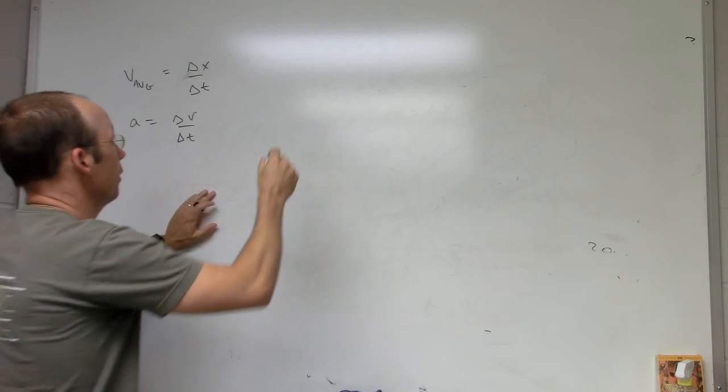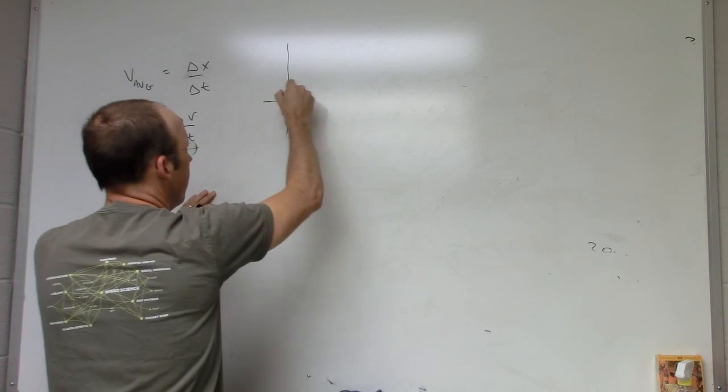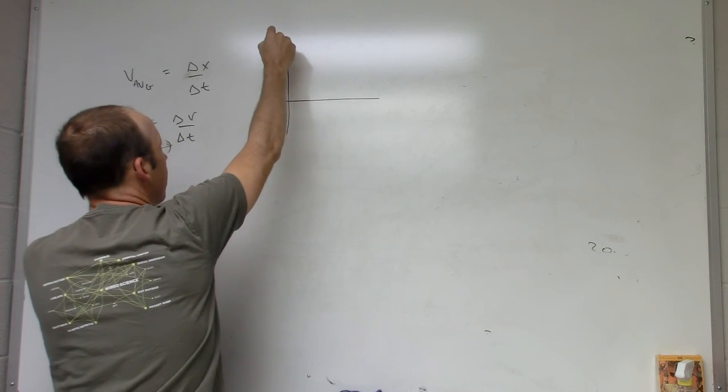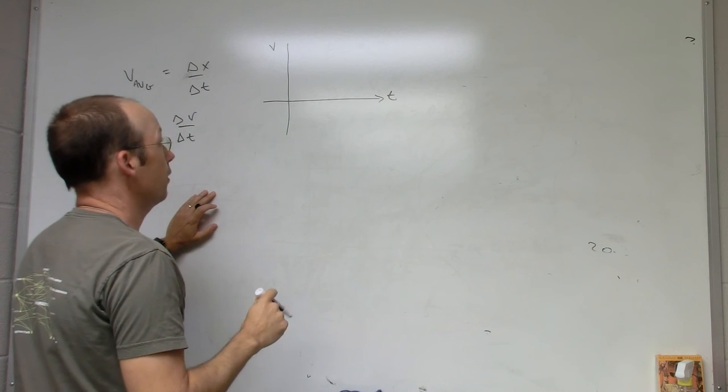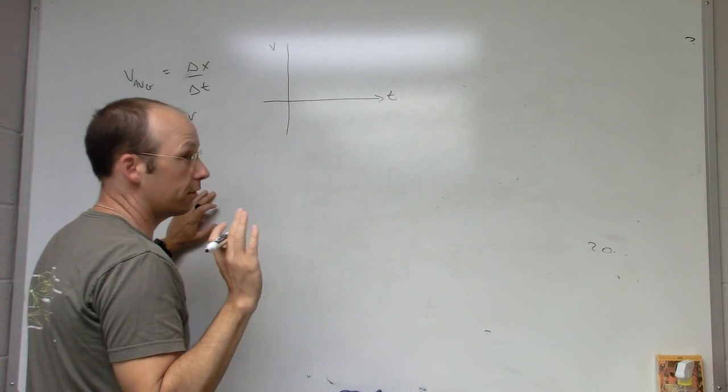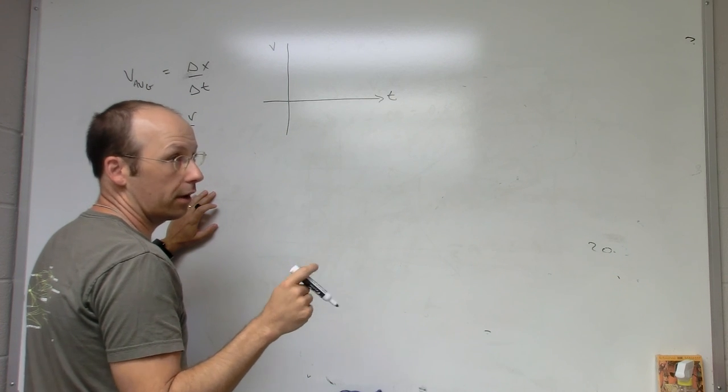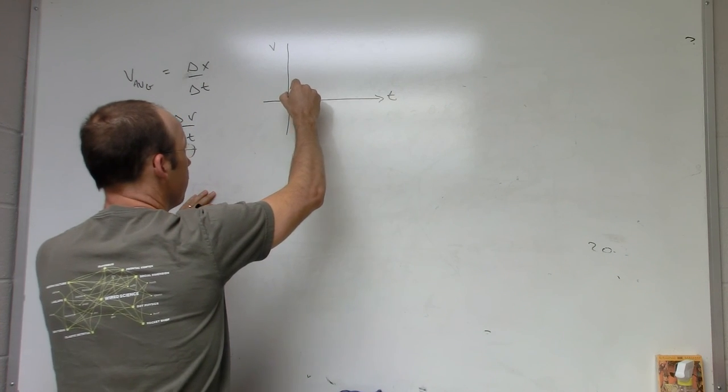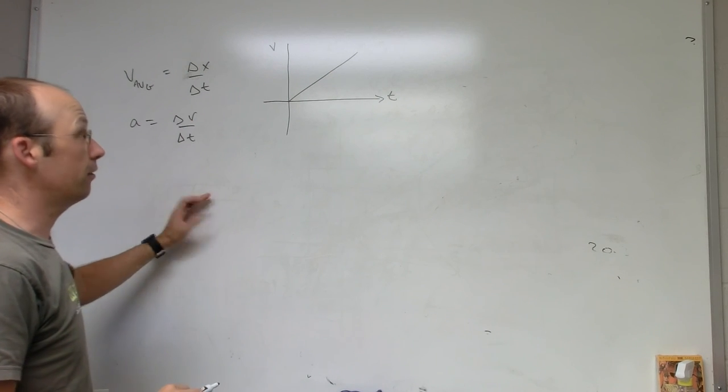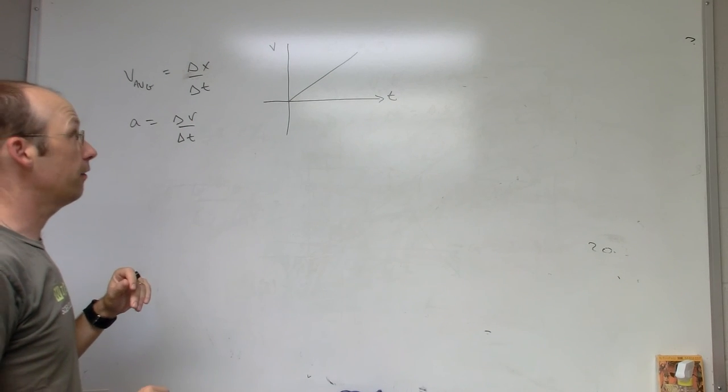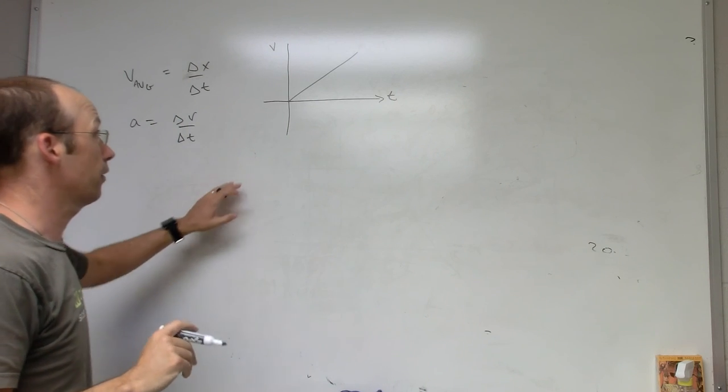So let me show you what I'm talking about here. If I have a velocity graph, and I have an object that starts from rest, and I let it go and it accelerates, then this is what the graph would look like. Okay, so it's constantly increasing in velocity since it's speeding up with constant acceleration.